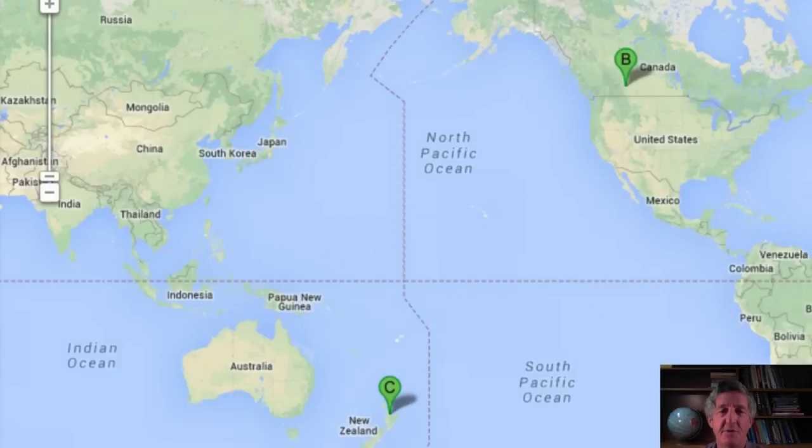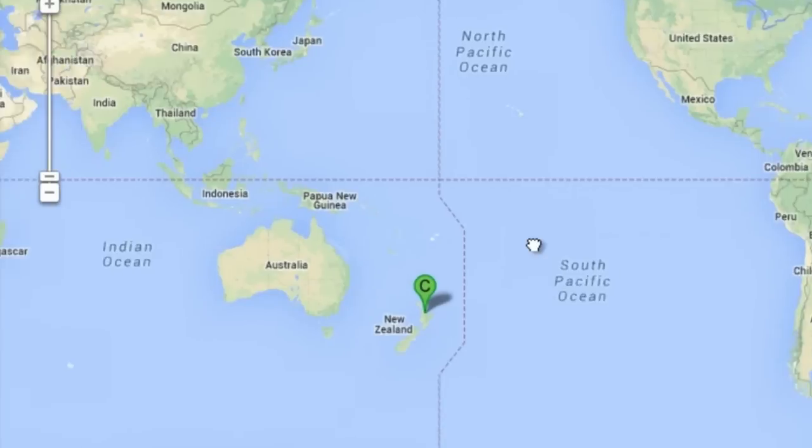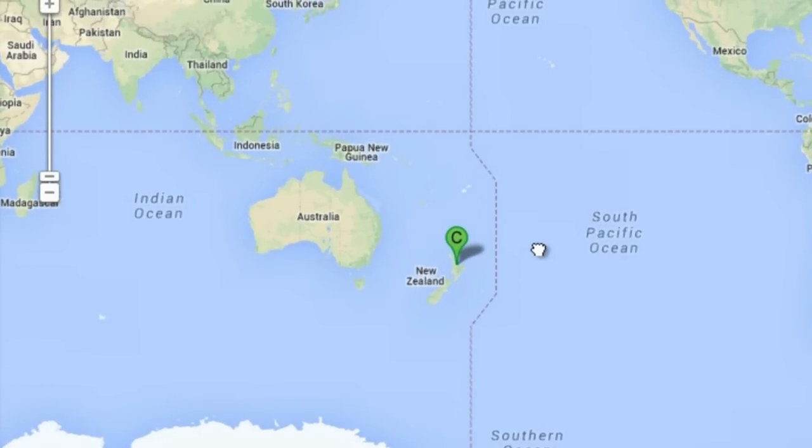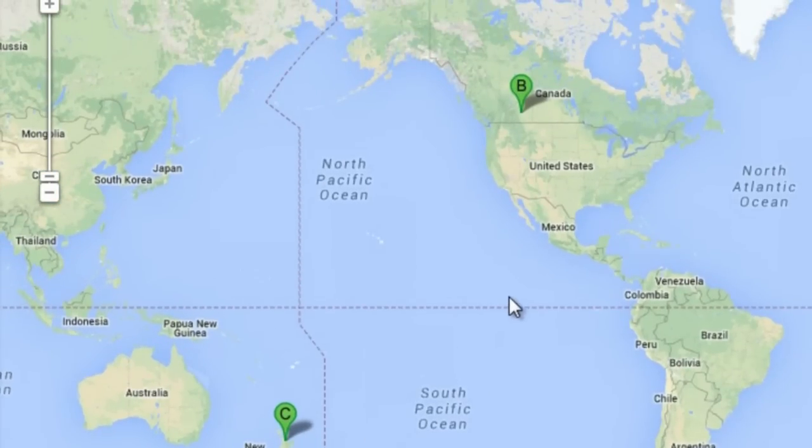But that's not where I'm from originally. I moved here about 20 years ago. Here on this map, of course, this is New Zealand. Google puts things with the North at the top, which is probably what you're used to. I came here from Calgary in Canada, the University of Calgary, where I was for many years.